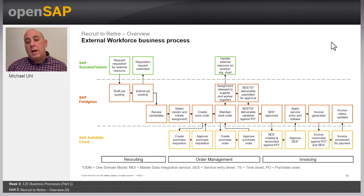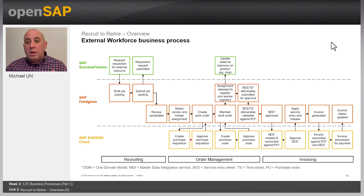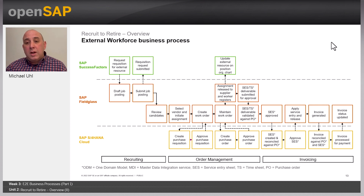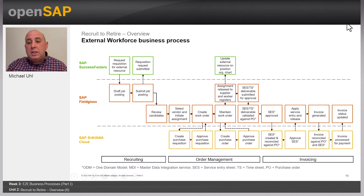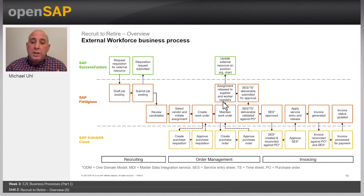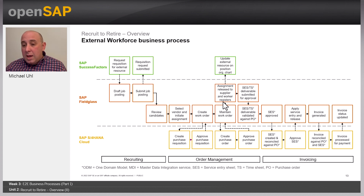From here we move from the recruiting side to order management. That order management will initiate a purchase requisition and purchase order to S4 to ensure the labor cost is within budget and financial approvals. All these integrations between Fieldglass and S4 ensure projects are staffed within the financial controls you want. Once the budget is approved, it is released to the worker to start their assignment — and it will be visible in your overall employee org chart. As a manager, you can see all your full-time employees and all your contractors and external resources working on projects, giving you full visibility from both an org chart and financial perspective.